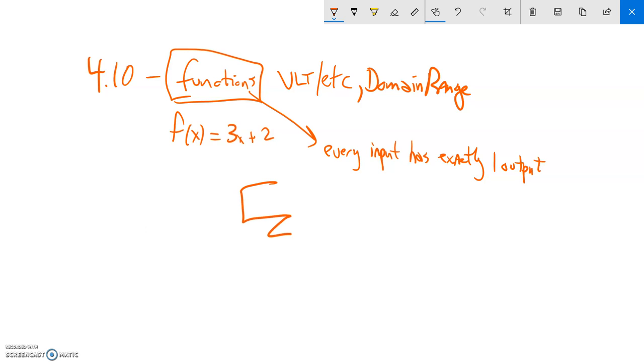So what I mean by that is if I have this machine like this, and I plug in like 3, only one number comes out, 5. It doesn't split into two numbers or more.